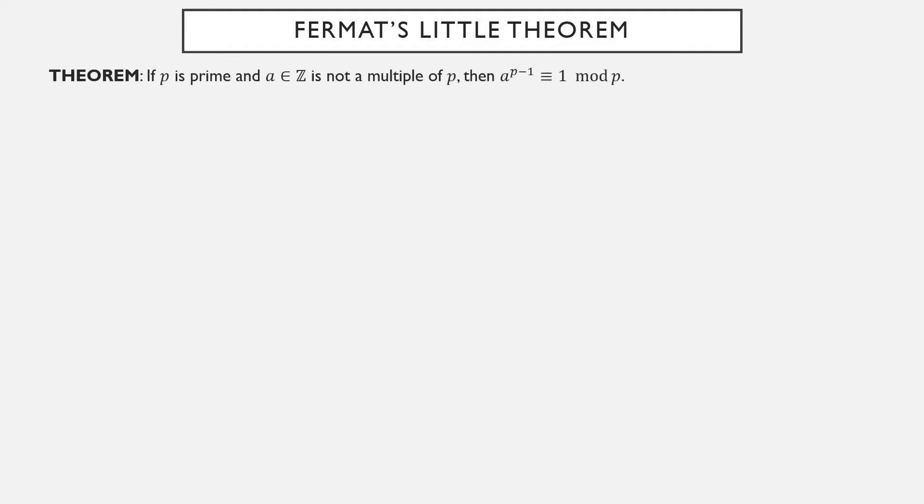If p is prime and a is not a multiple of p, then a to the p minus 1 is definitely equivalent to 1 mod p. This is just Euler's theorem in disguise. Since a is not a multiple of p and p is prime, it's relatively prime to p. Also, since p is prime, phi of p is just p minus 1, so a to the phi of p is equivalent to 1 mod p. And there we have it.